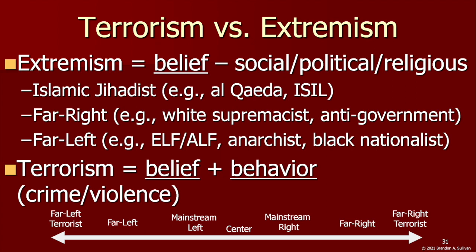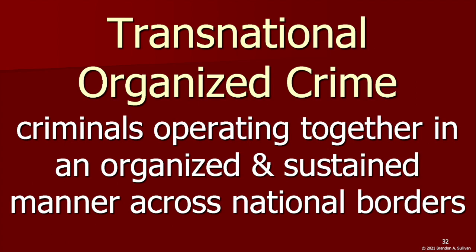This brings us to transnational organized crime — criminals operating together in some kind of organized and sustained manner across national borders. It's being lumped in together here with more traditional organized crime groups and street gangs because they really aren't much different from one another. The only major difference is whether their activities are confined to a more local area or whether they operate across borders. They still tend to commit similar types of crimes, exploiting whatever criminal opportunities are available for profit. Common transnational organized criminal activity includes trafficking illicit drugs and other goods, and human trafficking — selling people, especially for sex or labor. Transnational organized crime has also been aided by the availability of the internet for communication, coordinating operations, and carrying out profit-oriented crimes.